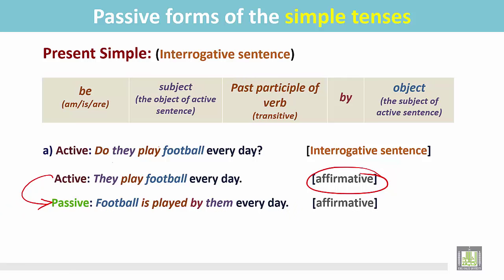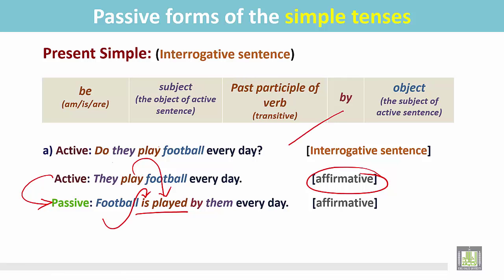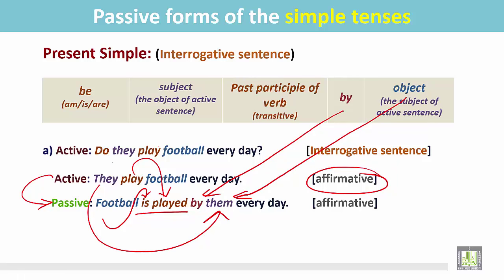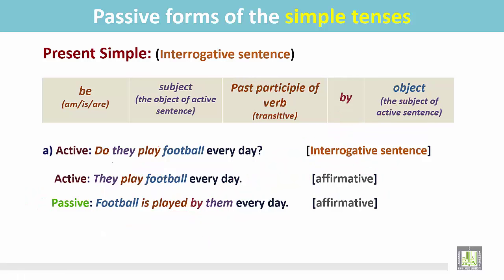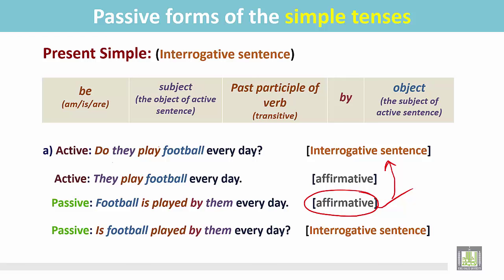'Football is played by them every day.' Football was the object — it becomes the subject here. The verb 'play' is in the present form, so we use 'is played' because the subject is singular. Then we put 'by' and the object from the active sentence: 'they' becomes 'them'. So: 'Football is played by them every day.' To make this interrogative, we put the be verb in front of the subject: 'Is football played by them every day?'